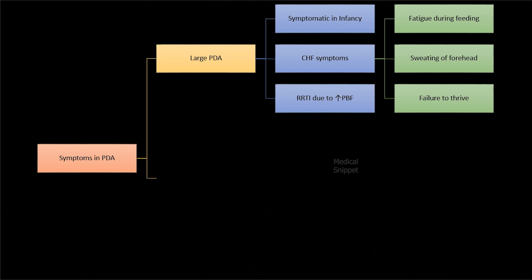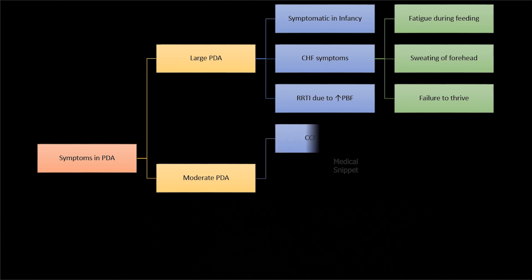In moderate-sized PDA, the left-to-right shunt depends not only on systemic and pulmonary vascular resistance, but also on ductus size. Congestive heart failure can occur in infancy, but due to compensatory left ventricular hypertrophy, the symptoms improve.